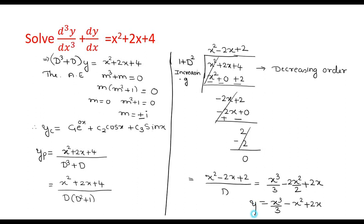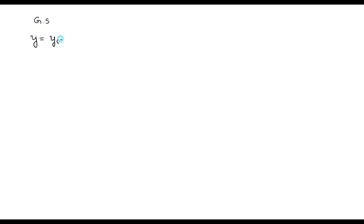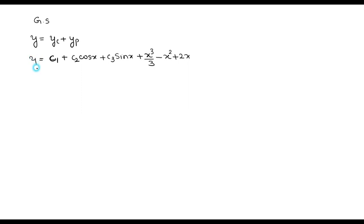This is the particular integral by the division method. The general solution is the sum of the complementary function and the particular integral. So the general solution is y equals c₁ plus c₂cos(x) plus c₃sin(x) plus x³/3 minus x² plus 2x. This is the general solution for the given problem.